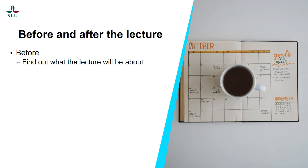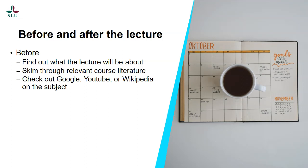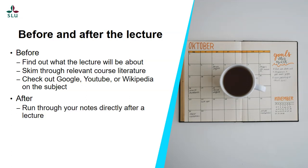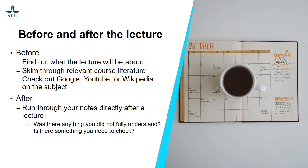Find out what the lecture will be about — visit your course homepage or schedule for information. Skim through relevant course literature to familiarize yourself with the subject; maybe the teacher has given you some reading advice. Check out Google, YouTube or Wikipedia on the subject. You don't have to expect to get the hang of everything, but just skimming through it will make it easier to follow the lecture if you have some prior knowledge of terminology, current issues and so on. Also try to establish a routine after the lecture where you go through what you have learned. Run through your notes directly after the lecture — it will jog your memory. Was there anything you did not understand? Try to check this not too long after the lecture while you still remember what you need to find out.